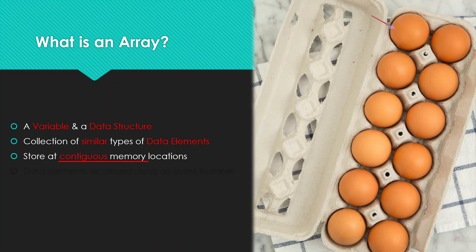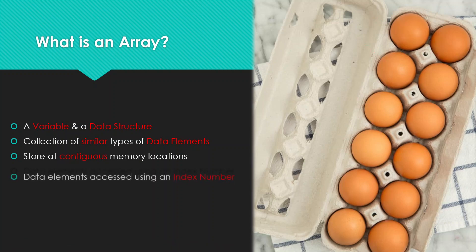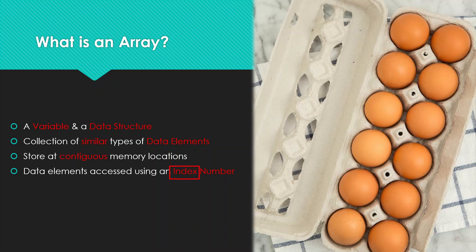Another important thing to note is that arrays store their elements in contiguous memory locations. That means that when you're storing values in arrays, they occupy spaces next to each other in memory — one element after the next in continuous memory locations. Every position where an array stores a data element is called an index, and arrays can be zero-based indexed, meaning the very first element in that array begins at index number zero.